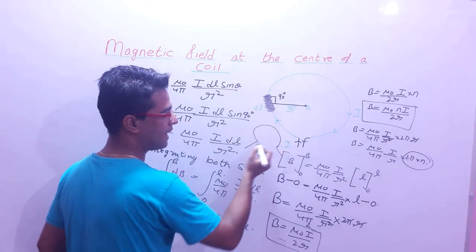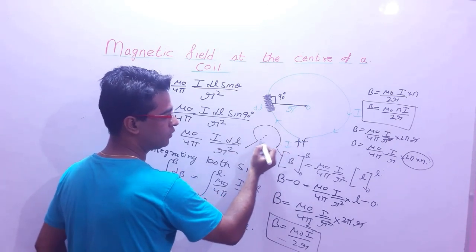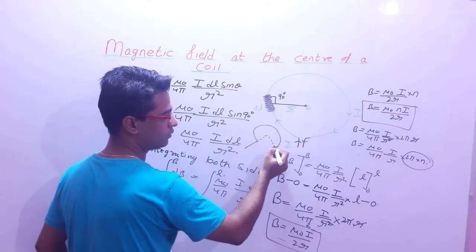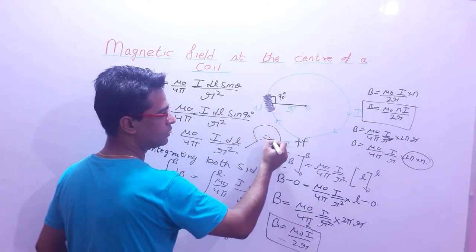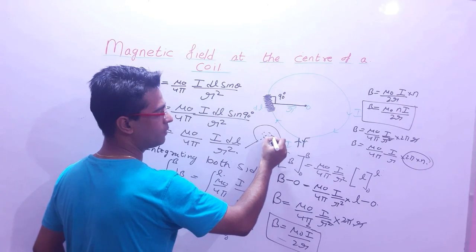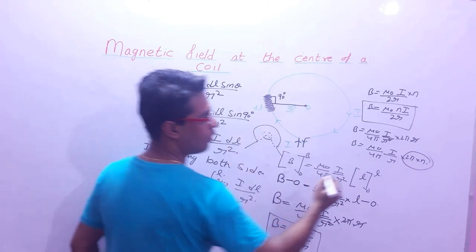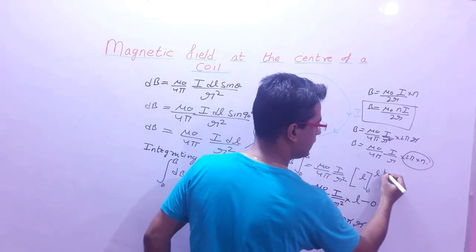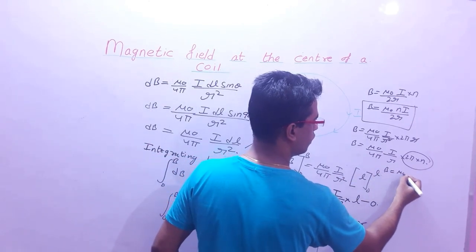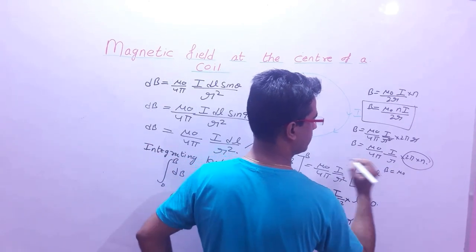अगर coil सिर्फ एक छोटे से angle पर हो — arc की form में — तो उस angle के लिए formula आजाएगा: B = μ₀I · (angle/2π) / 2r, or equivalently B = μ₀I·θ / 4πr।